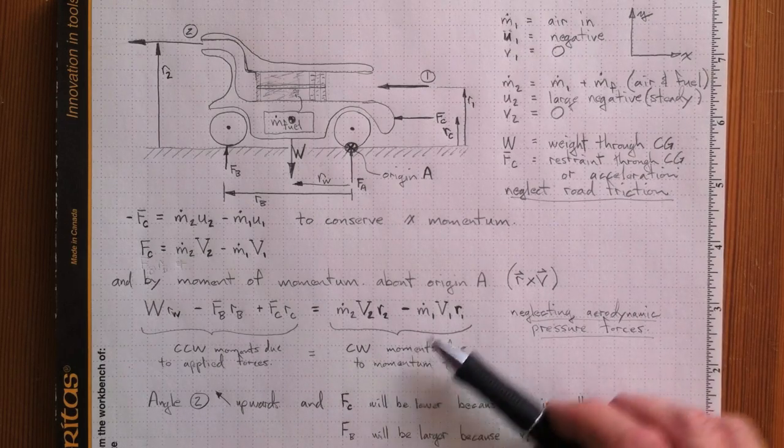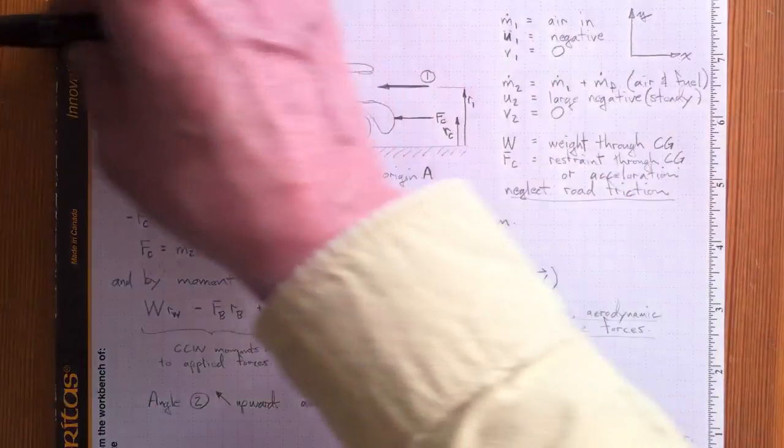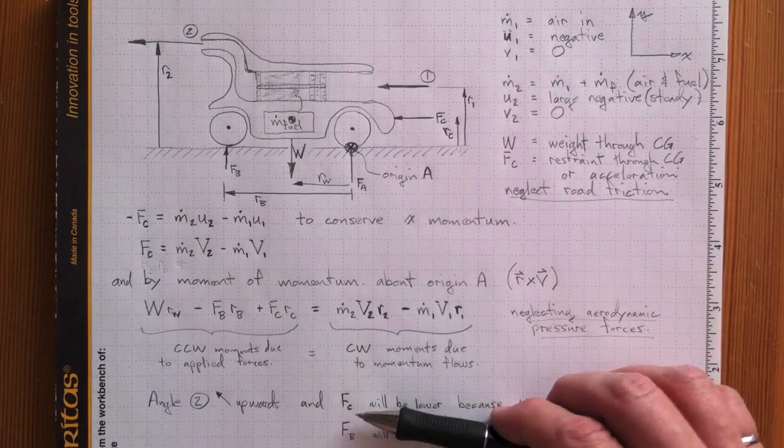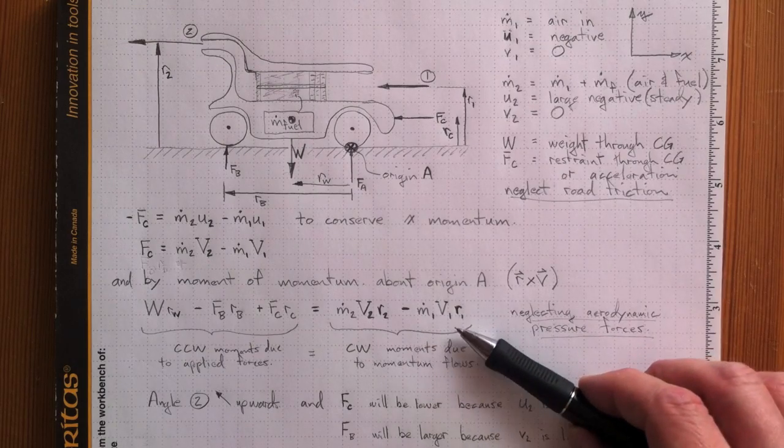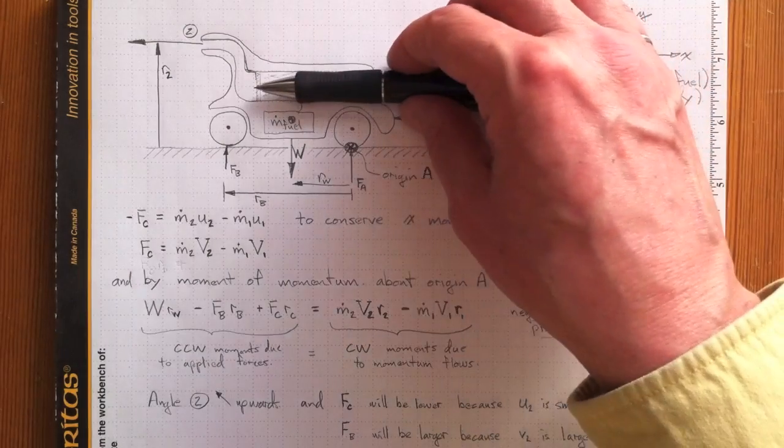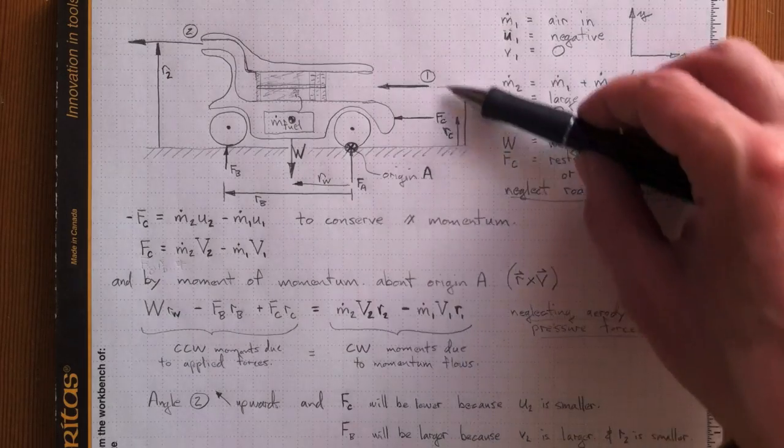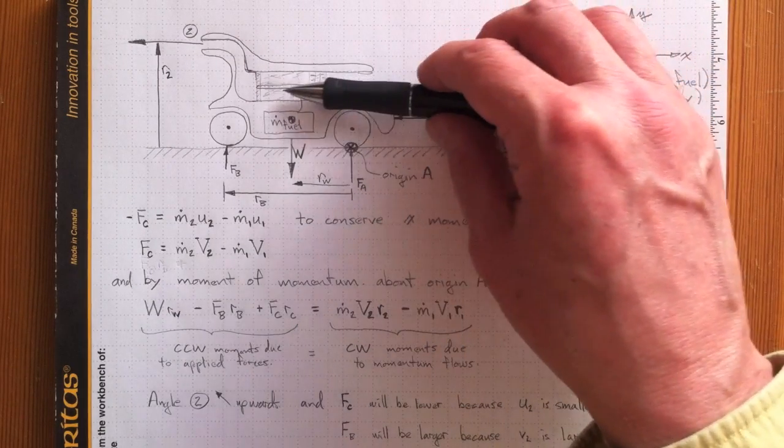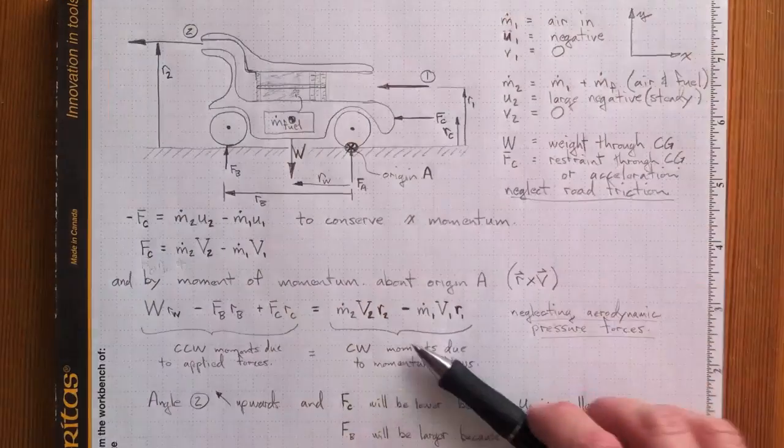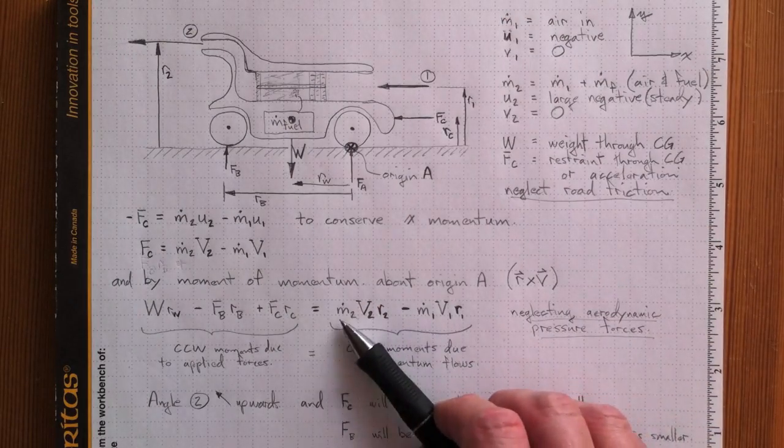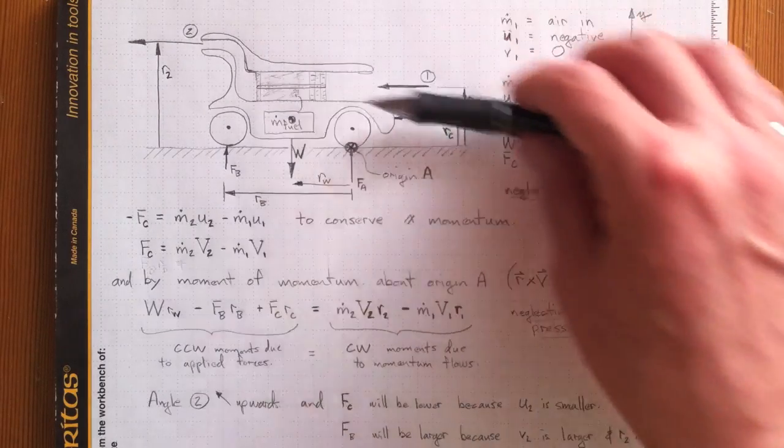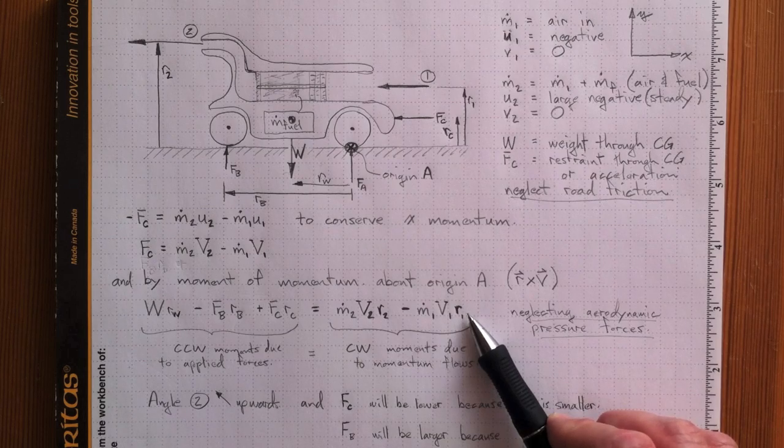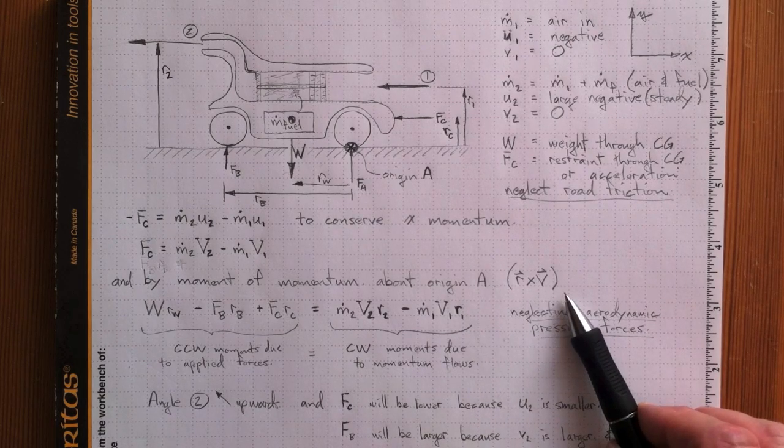Clockwise moments due to the momentum flows, M dot 2 times the absolute value of the velocity going out there, times this offset radius. Minus M dot 1 V1, that's the momentum coming in here, times the radius that it comes in at. If there's fluid coming in here, this is the same effect, it's going out there but in the opposite direction. So this is generating a thrust, this is generating a counter-thrust if you like. Negative M dot 1 V1 R1. Again, it comes from taking the moments of the momentum equation.